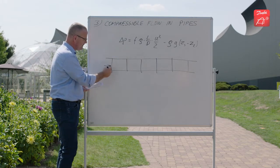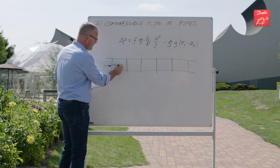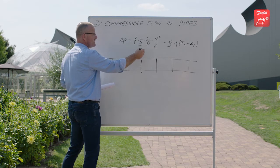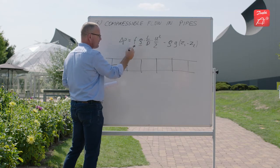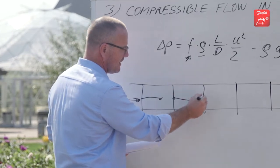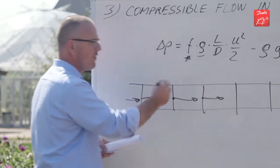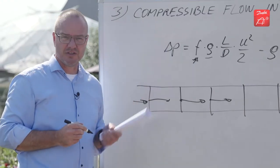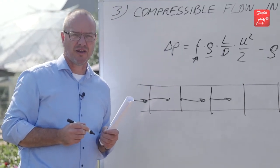For each of these pipes we then use this equation. So the flow comes in here, we calculate the pressure drop. Here we update all the properties, the density, also the viscosity that goes into the friction factor, calculate the pressure drop for this pipe segment, etc. So we move forward downwards in the pipe. This will give you a pretty good picture of the pressure drop in a very long gas pipe.